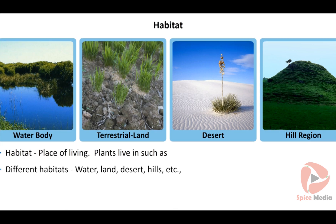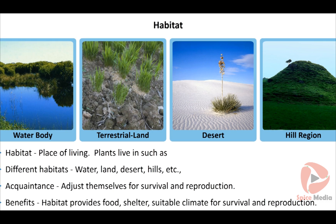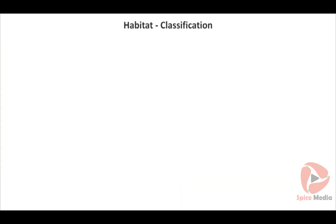Place of living is called a habitat. Plants live in different habitats such as water, land, desert, hills, etc. Plants adjust themselves to the place where they live, survive well and reproduce. A habitat provides them food, shelter, and suitable climate for survival and reproduction.